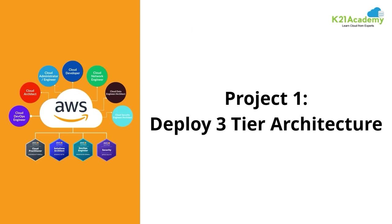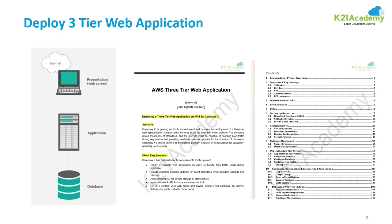So first you begin with deploying a three-tier architecture — very important if you come from a traditional on-premise background. You have a database tier where you store all the data, an application tier where developers put the application logic, and a web tier running Apache, HTTP, or IIS servers, all front-ended by a load balancer.